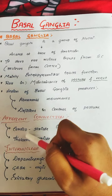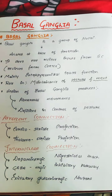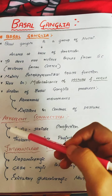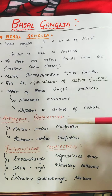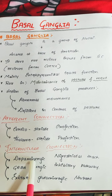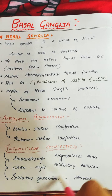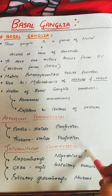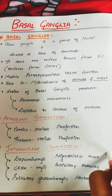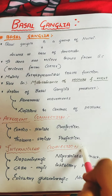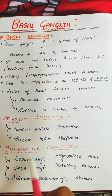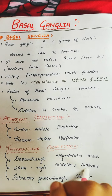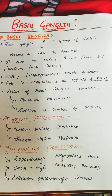Efferent connections are of two types: corticostriate projection — a connection between the cortex and the striatum (caudate nucleus plus putamen) — and thalamostriate projection. There are also three internuclear connections: dopaminergic, GABAergic, and glutamatergic. The dopaminergic nigrostriatal connection is very important; a decrease in dopamine in this pathway may cause Parkinson's disease. GABA is inhibitory, while glutamic acid is an excitatory neurotransmitter.